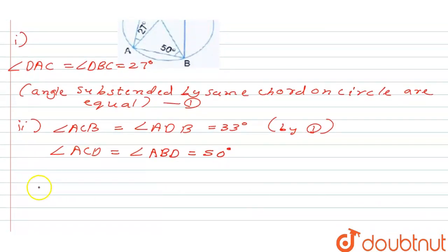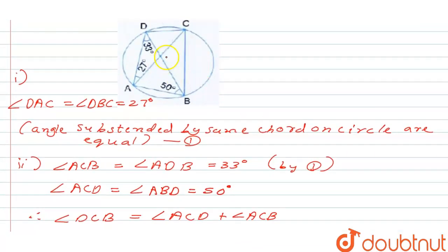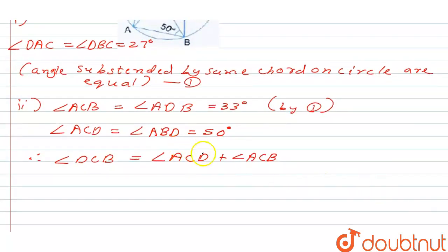So therefore we can say that angle DCB is equal to angle ACD plus angle ACB. We can see that DCB is the sum of angle ACD and angle ACB, this and this. So it is going to be, we have both the angles.